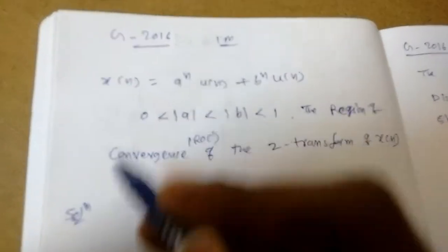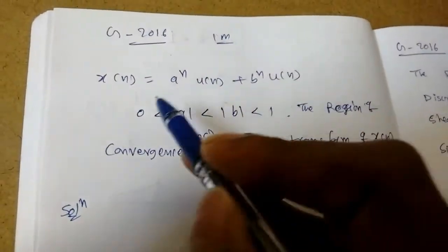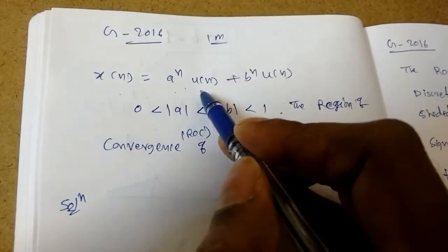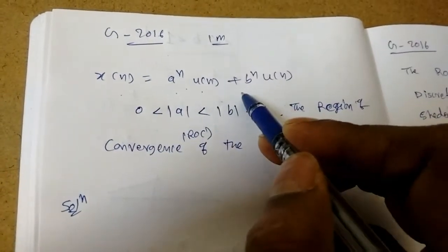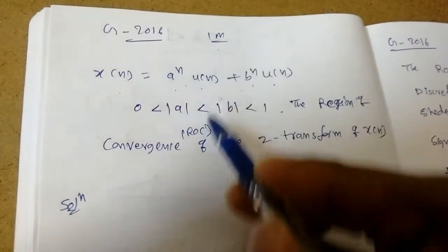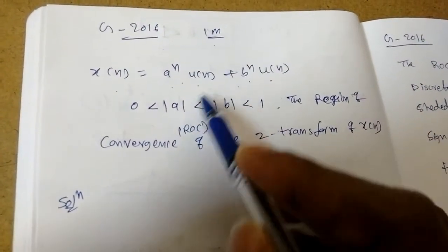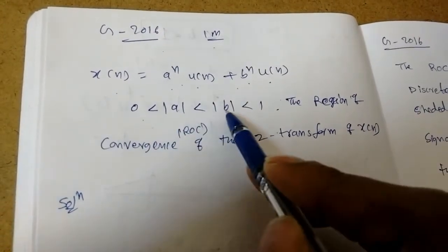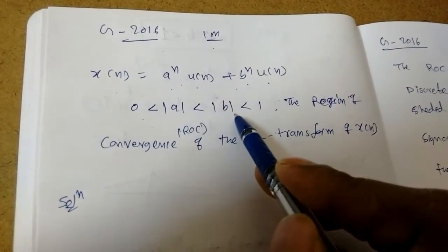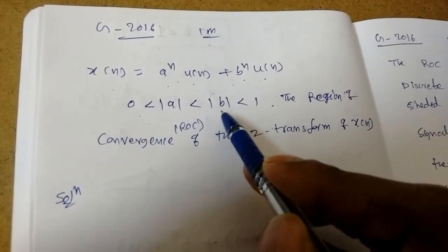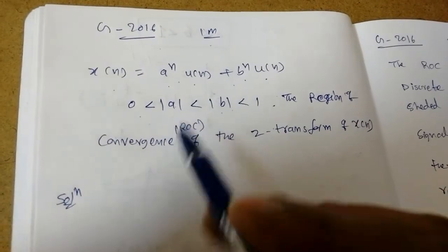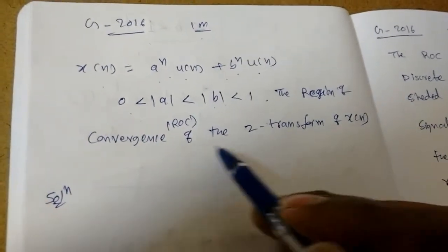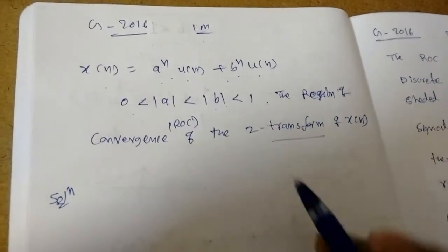In GATE 2016 (one mark), x of n is equal to a power n times u of n, plus b power n times u of n. It is given that mod a and mod b are both less than 1, but mod a is less than mod b, which means b is greater than a. The question asks for the region of convergence of the Z transform of x of n.